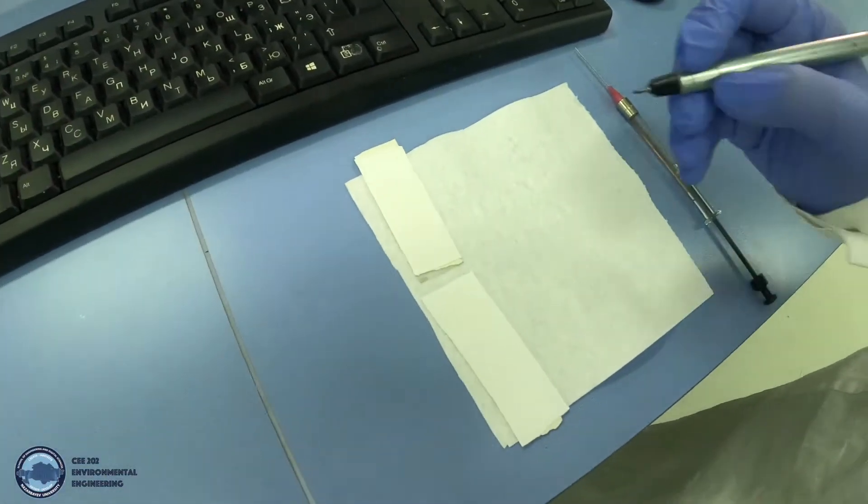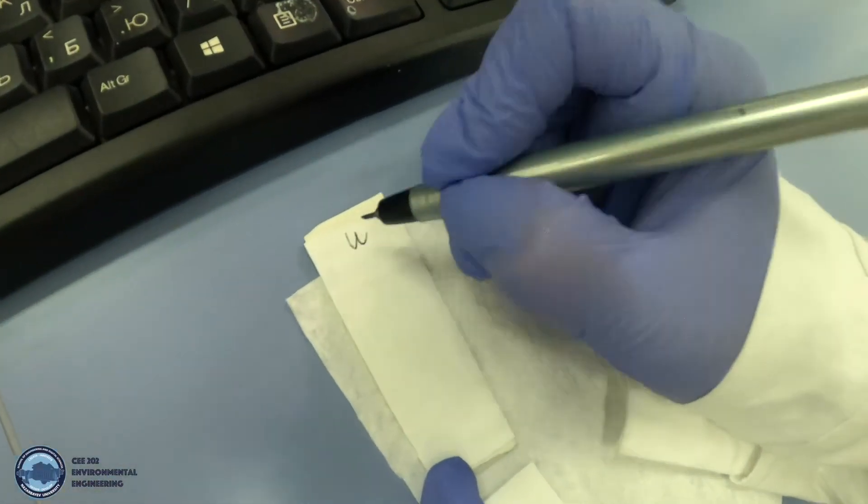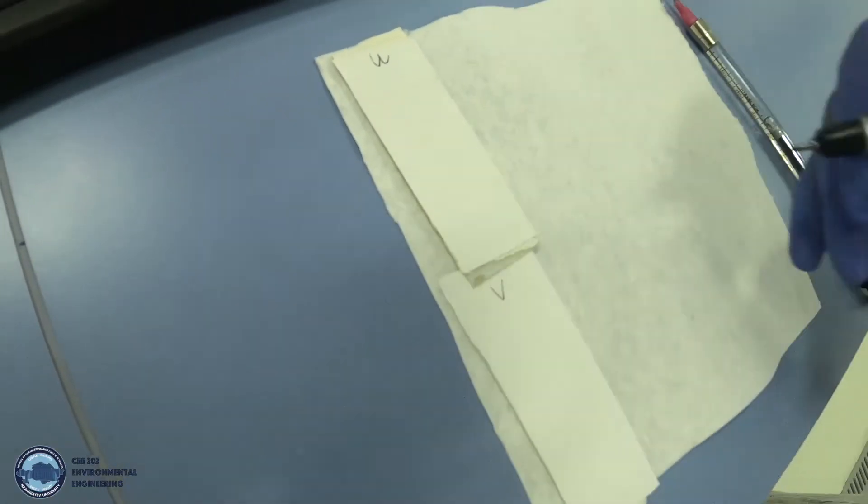Next, we will label each sample U for the fouled membrane and V for the virgin one.